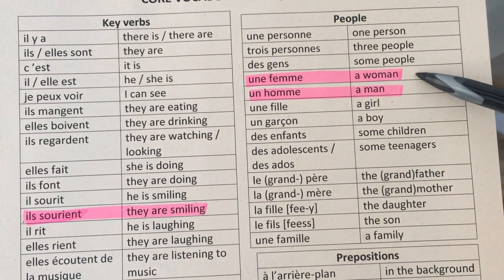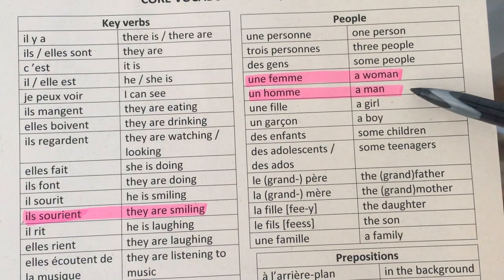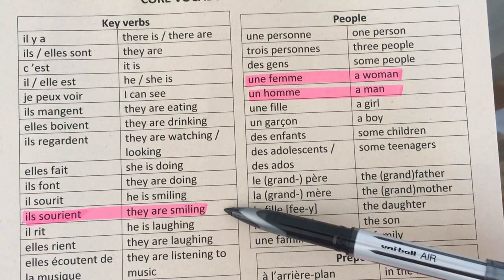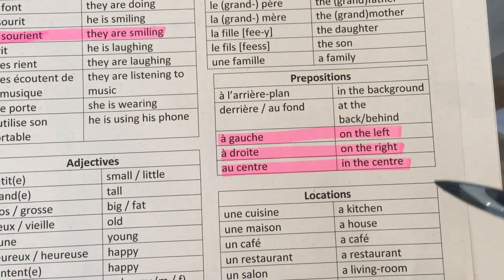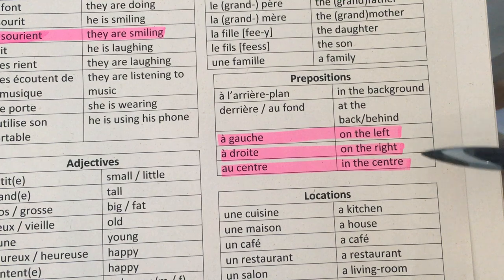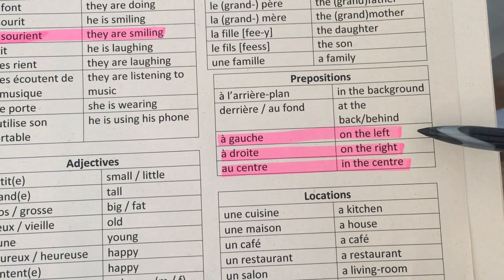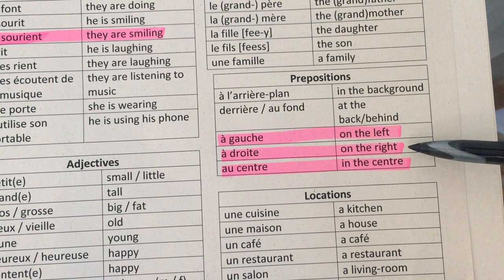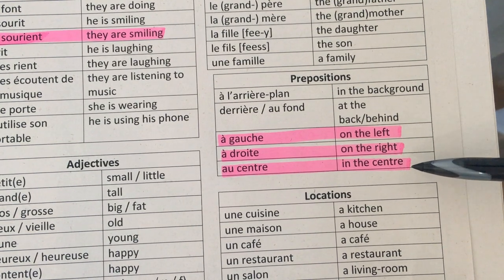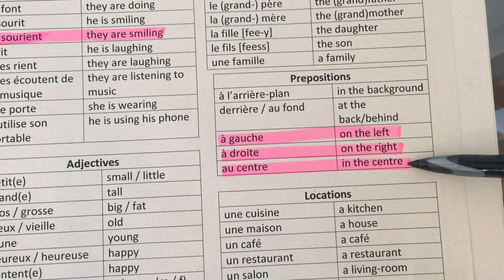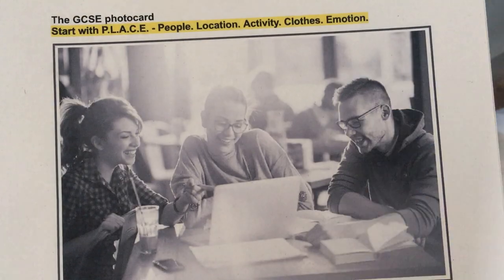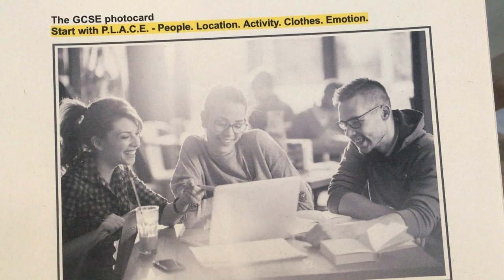So we've got UNE FEMME — a woman — UN HOMME — a man — IL SOURIT — they are smiling. And down here we've got prepositions which we had in the previous video. Today I'm going to use À GAUCHE (on the left), À DROITE (on the right) and AU CENTRE (in the centre). I think these are going to be useful. Obviously you will write your own description at some point and it is up to you how you approach this.